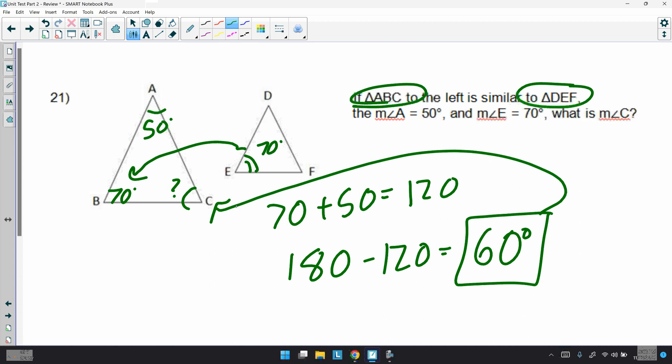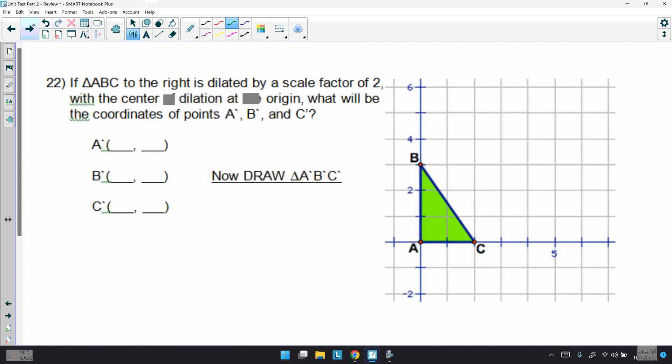22. If triangle ABC to the right is dilated by a scale factor of 2, with the center dilation to the origin, what will be the coordinates for points A prime, B prime, and C prime? And, they want us to draw it. I'm going to change colors here real quick. Let's see. A is 0, 0, so 0, 0 times 2 is 0, 0. B is going to be 0, 3 times by 2 would be 0, 6. And, then if we go to C, C is 2, 0 times 2 would be 4, 0. And, again, to trace the new image. Well, scale factor 2, the triangle did get bigger, so we're doing the right thing.